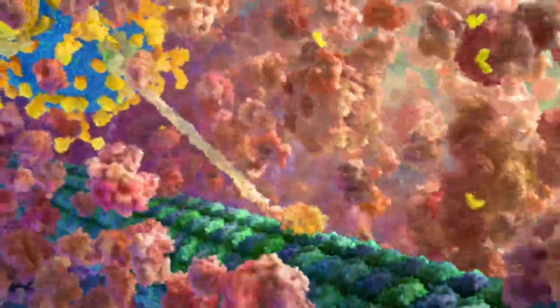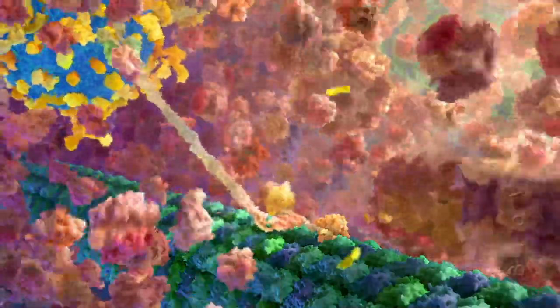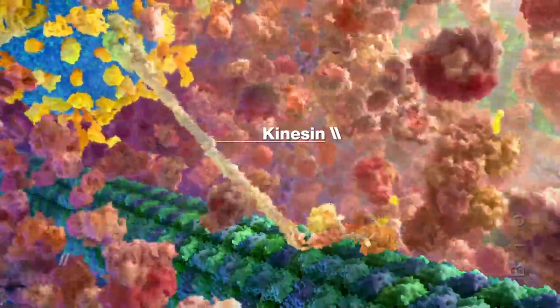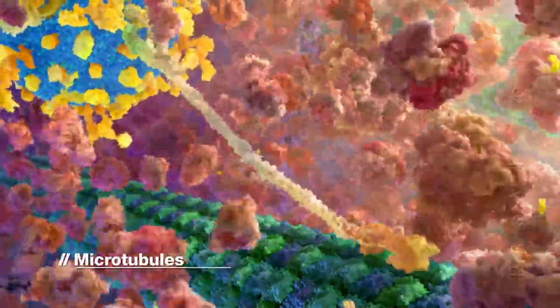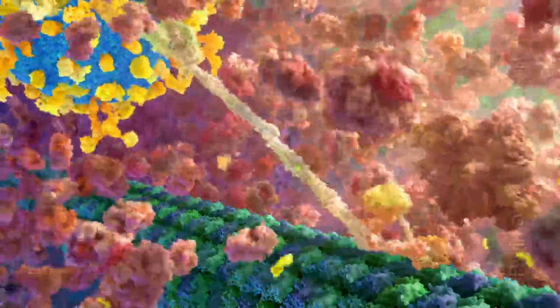Synaptic vesicles undertake a long journey along axons. To overcome limited diffusion caused by molecular crowding, motor proteins transport vesicles on long fibrous proteins called microtubules. Few kinesin motors move each synaptic vesicle toward the plus end of microtubules.